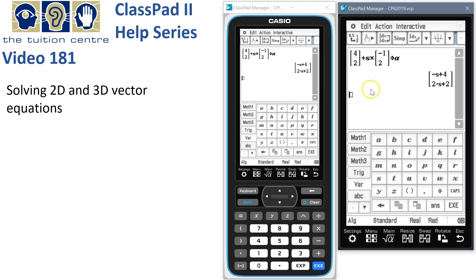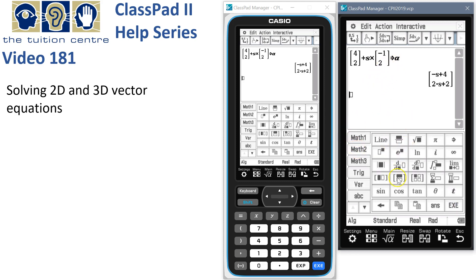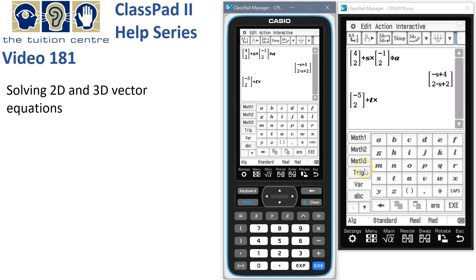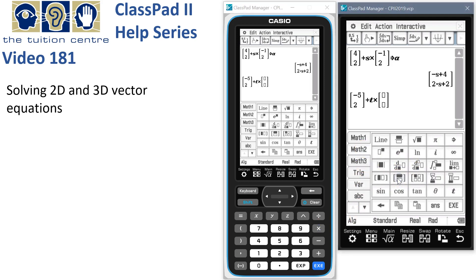Let's do the same thing. We'll take the second particle, which is leaving from negative 5, 2. We'll use T as its time parameter. T multiplied by its velocity, which is 1, 1. We'll store that as B.